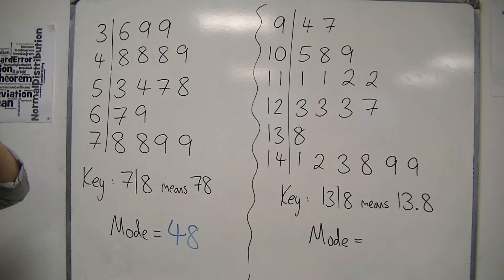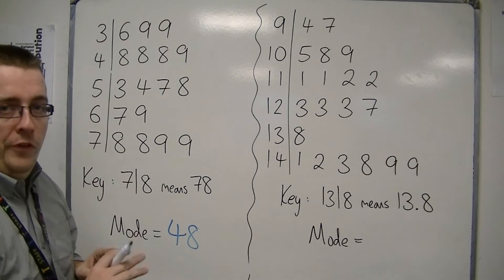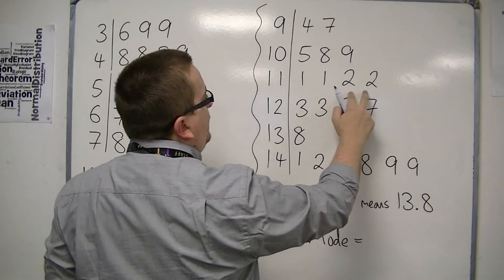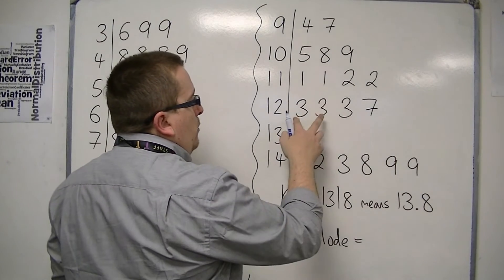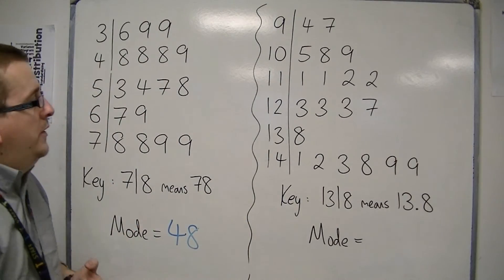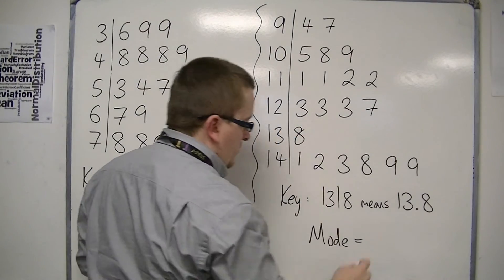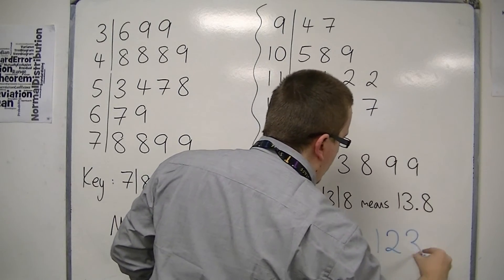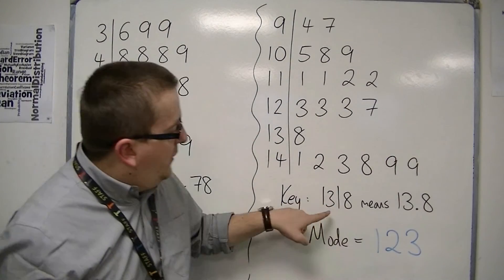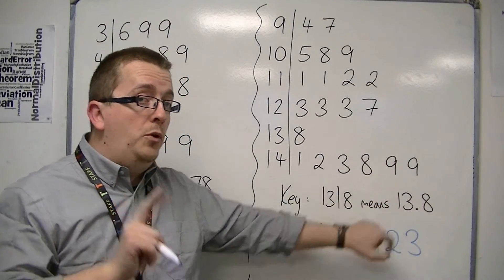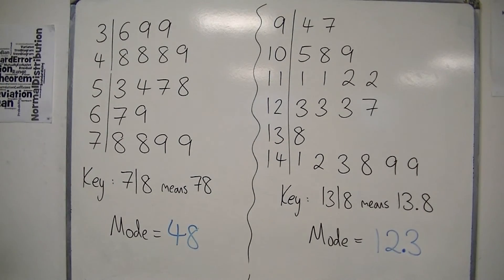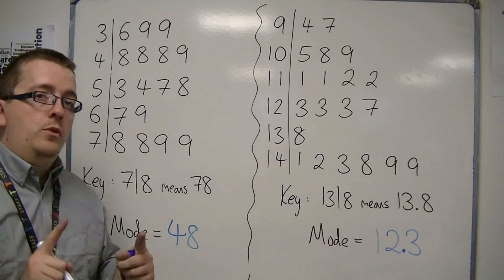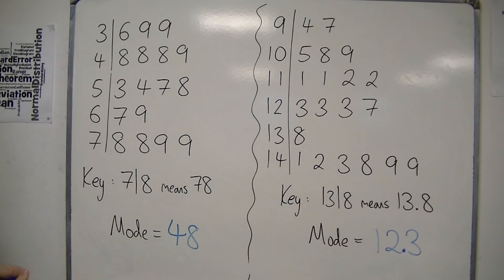So in this second example, now we know what we're looking for, we're looking for a line of the same number. So we've got two 1's there, two 2's, then we've got three 3's, two 9's down here. So we've got the 3's, three 3's in a row, so 12, 3, so 1, 2, 3 must be the mode. But the key says that 13, 8 means 13.8. So this is 12.3. So notice how the key also tells you what you need to know about what you're going to write down as your answer.